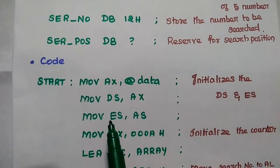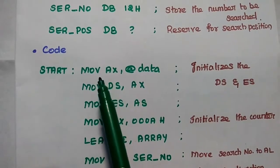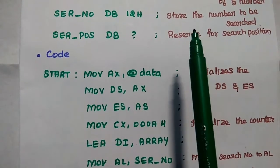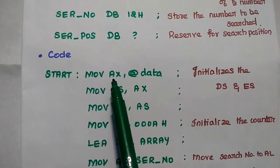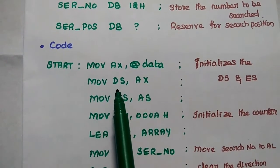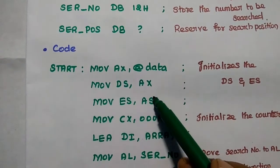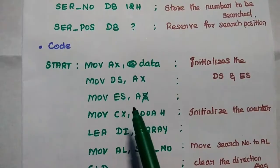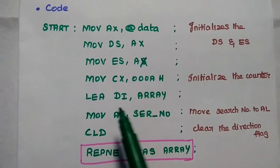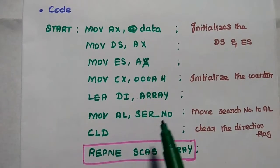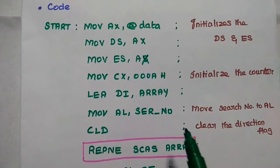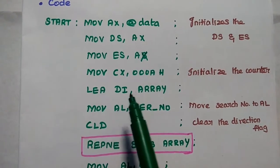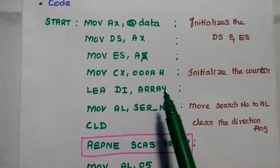After that, we start the code segment, which contains the instructions. We move the data segment address to AX, then move AX to both DS and ES to initialize the data segment as well as the extra segment. Then we initialize a counter, because we are going to search one by one through the array to find the position of the number. We also initialize the data index pointer using the array values.